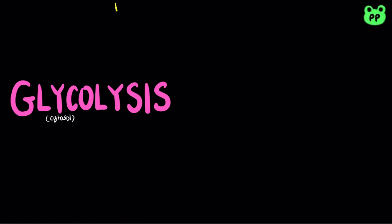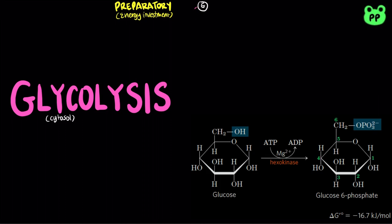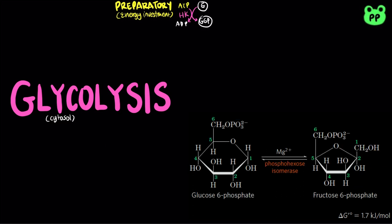The first 5 steps are known as the preparatory phase, or energy investment phase. In the first step, the terminal phosphate group of an ATP molecule is transferred to carbon-6 of glucose by the enzyme hexokinase, producing glucose-6-phosphate and ADP.